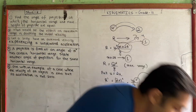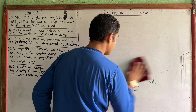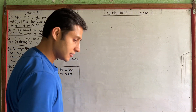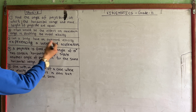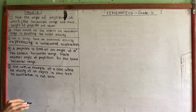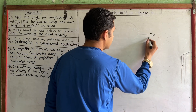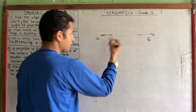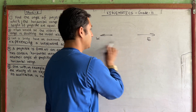Let's move on to question number 3. Can a body have an eastward velocity while experiencing a westward acceleration? Let's think about the directions — east and west.